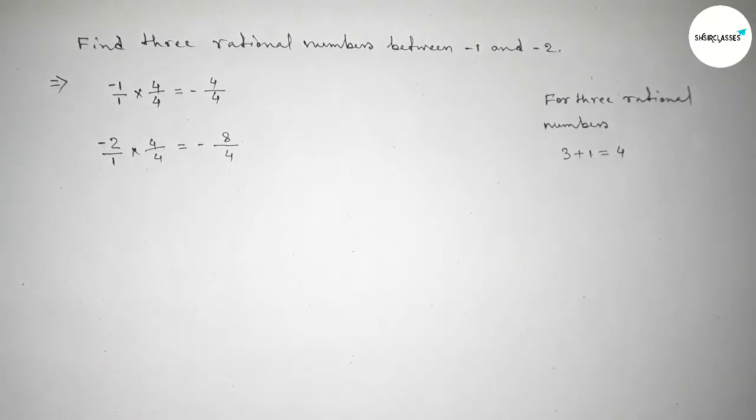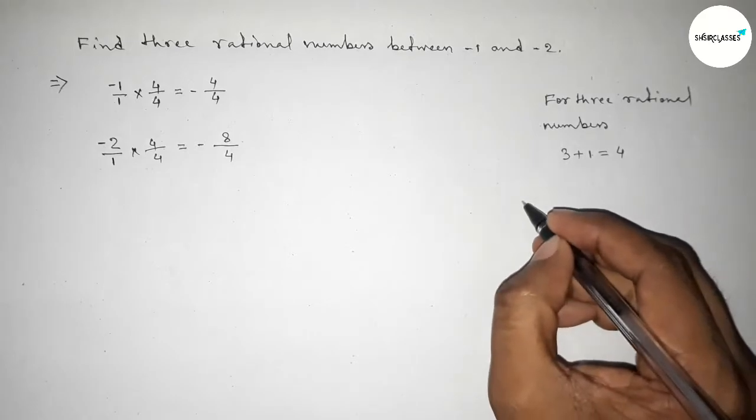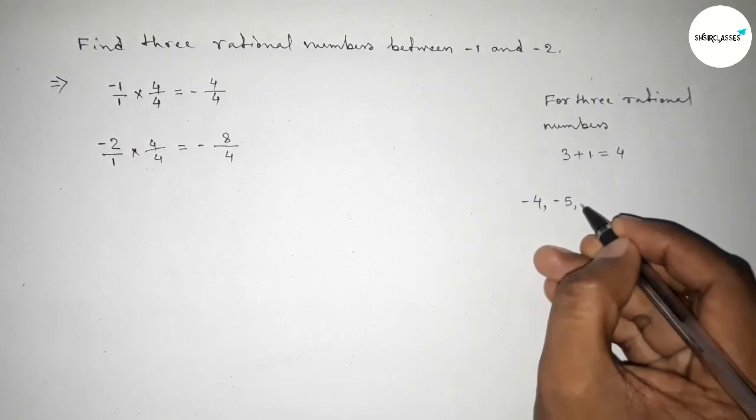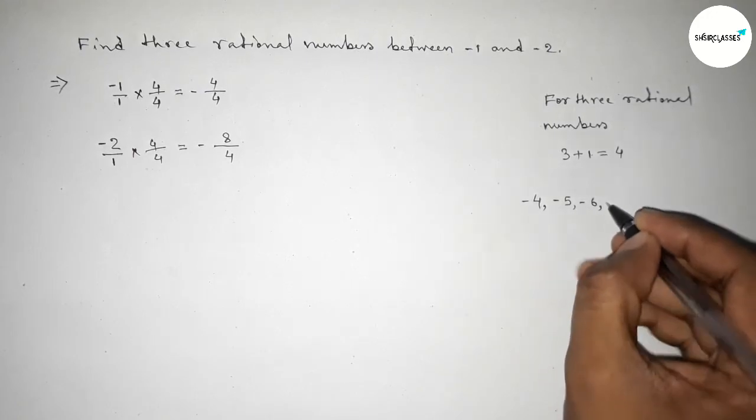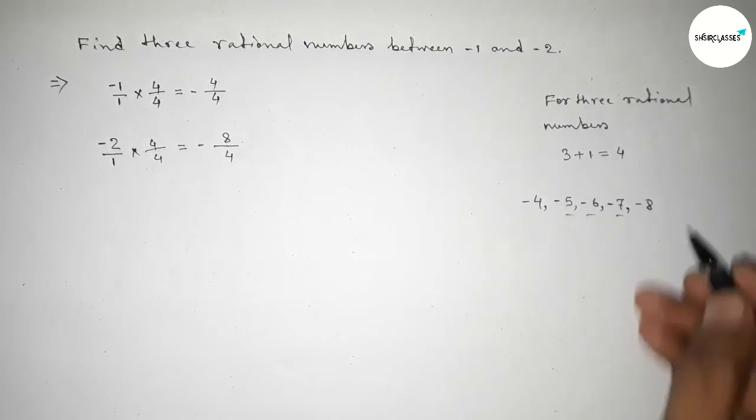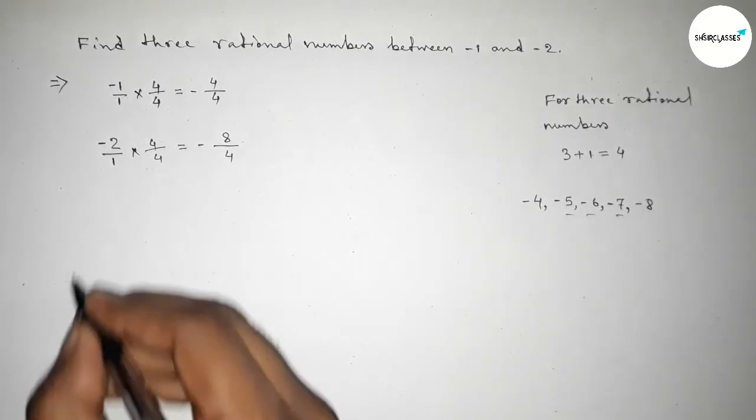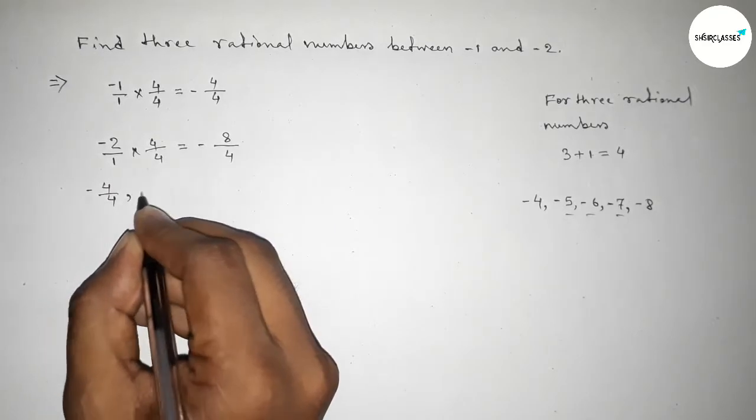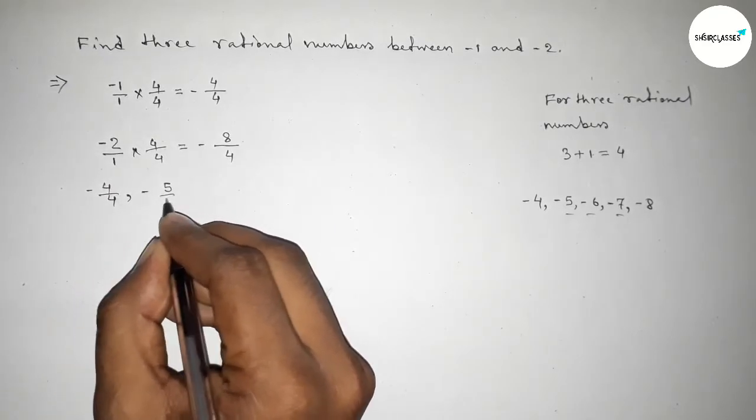Now between minus 4 and minus 8, we can get three numbers: minus 5, minus 6, and minus 7. These are the three required numbers. Now forming all the rational numbers.